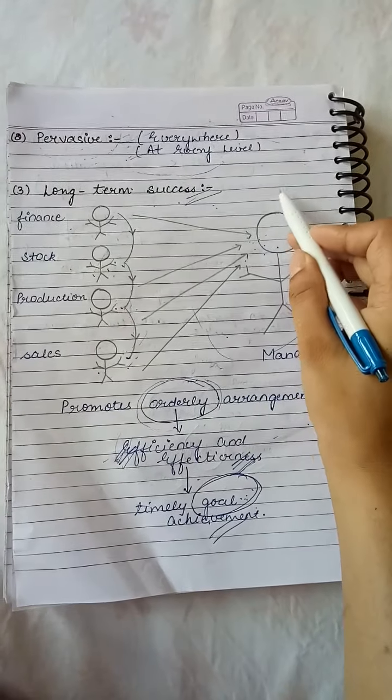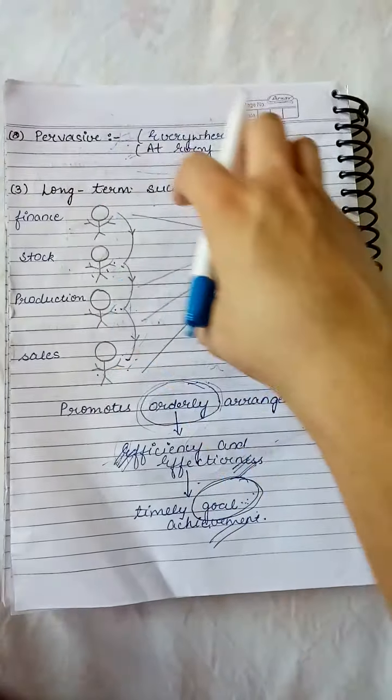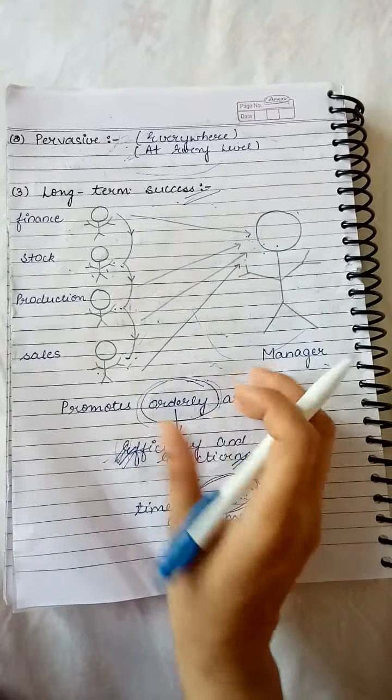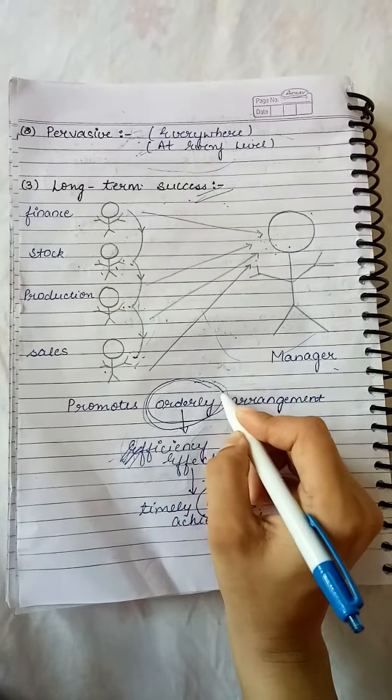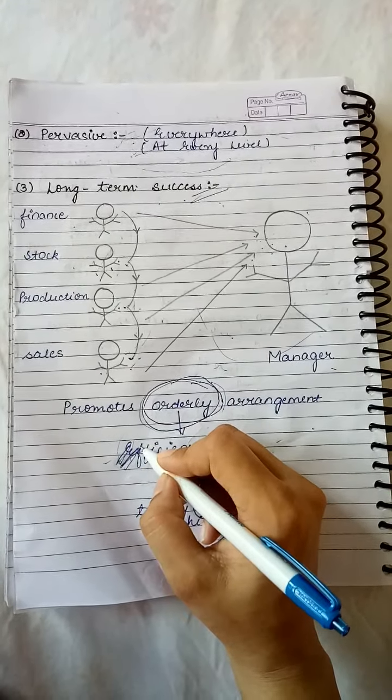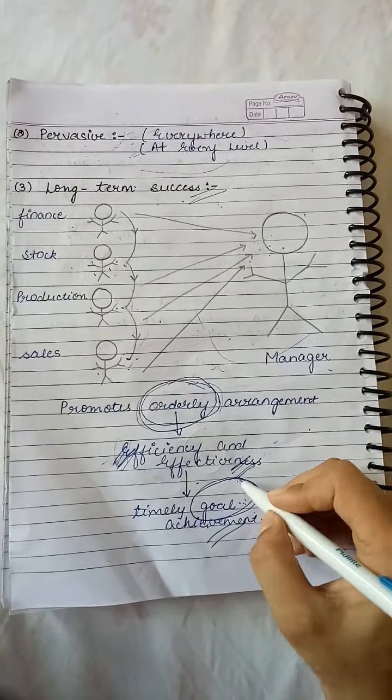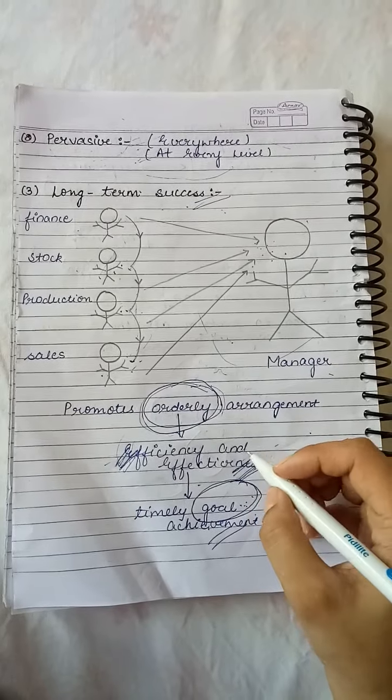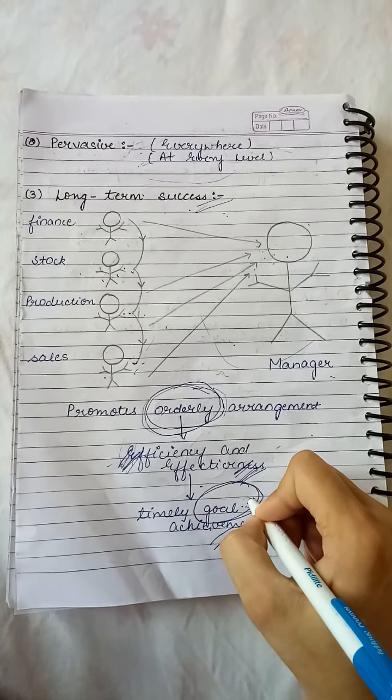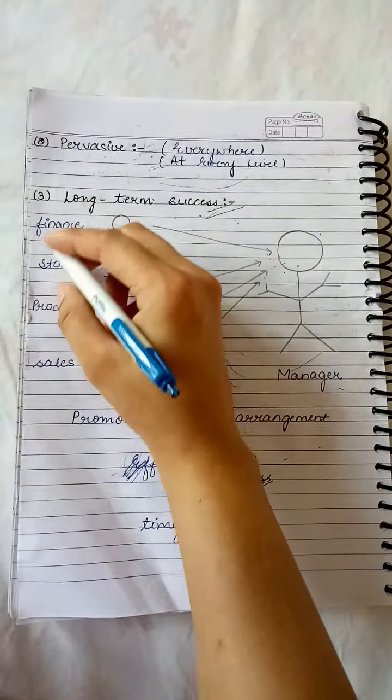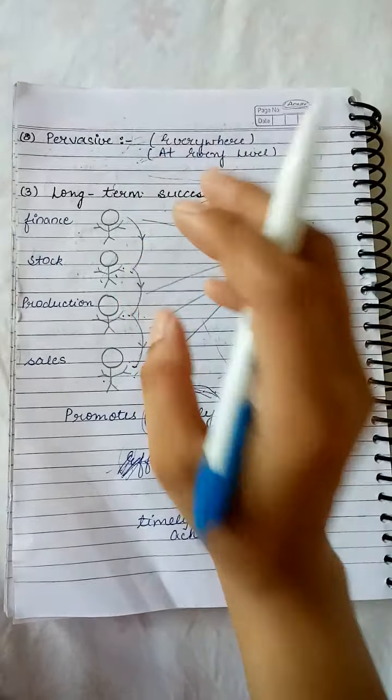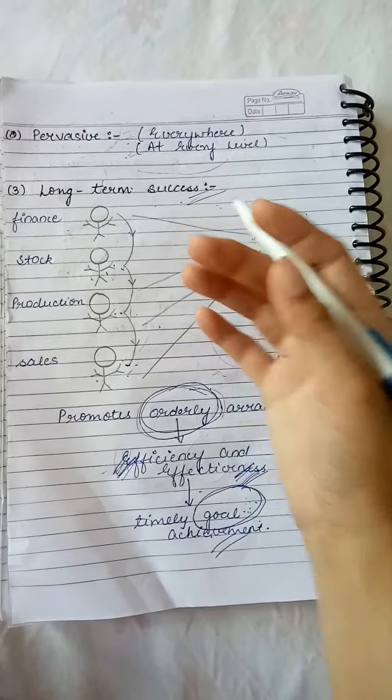All these departments are presenting their reports weekly to the manager. When middle level and top level are coordinating activities, what will happen? An orderly arrangement will emerge. Orderly arrangement means work will happen in an organized manner in our management. That will ultimately contribute toward the efficiency, meaning optimum utilization of resources, and the effectiveness which basically means the timely completion of the task. And that will ultimately lead to timely goal achievement. When organization is timely achieving goals, then it will contribute towards the long term success of the organization. So we have learned from these three things why we consider coordination as the essence of our management.